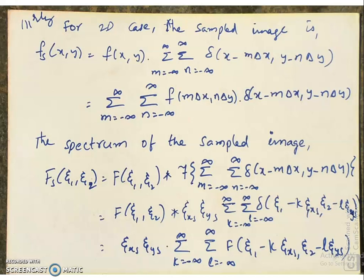The spectrum of the sampled image is Fs of zeta1, zeta2 equals F of zeta1, zeta2 convolved with the Fourier transform of the two-dimensional impulse train. Using the separability property of the Fourier transform, this equals F of zeta1, zeta2 convolved with zeta_xs multiplied by zeta_ys multiplied by summation over k and l from minus infinite to infinite of delta of (zeta1 minus k·zeta_xs, zeta2 minus l·zeta_ys), where zeta_xs equals 1/delta_x and zeta_ys equals 1/delta_y. Since convolution is linear, this turns out to be zeta_xs times zeta_ys times summation over k, l of f of (zeta1 minus k·zeta_xs, zeta2 minus l·zeta_ys).